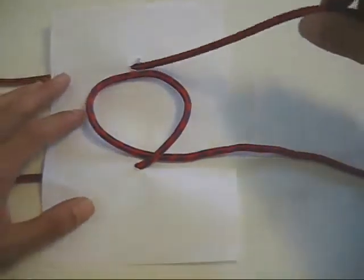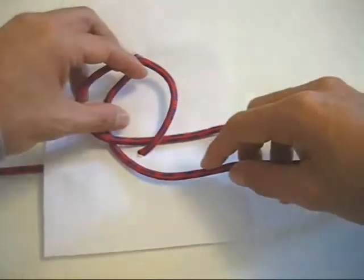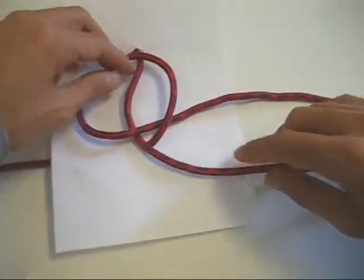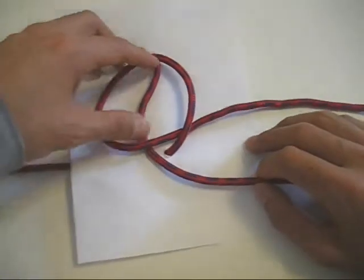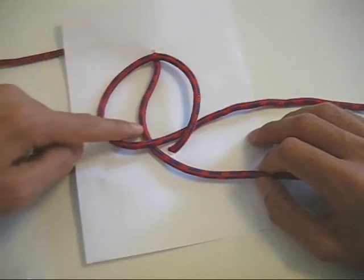Now take the top piece of cord and you want to run it underneath that loop. And the way I think of this is that you make something that looks a little bit like an eyeball with a pupil here.